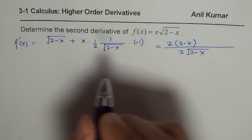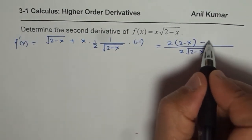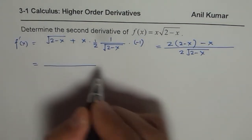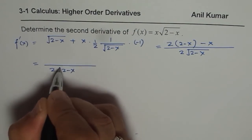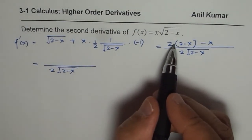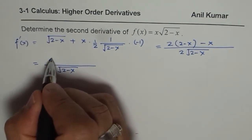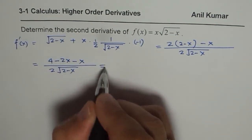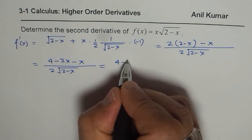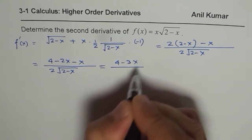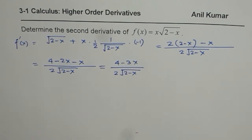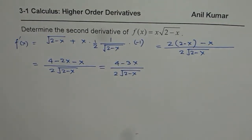So we could simplify this a bit and then you get 2 square root of 2 minus x. And the numerator is 4 minus 2x minus x, that is 4 minus 3x over 2 square root of 2 minus x. So that is the simplified form of the first derivative.